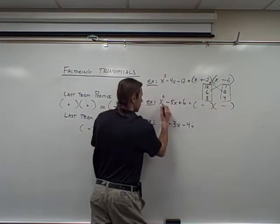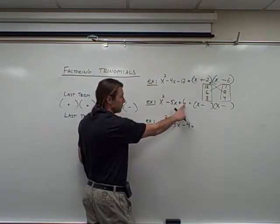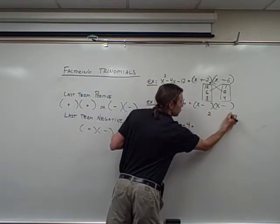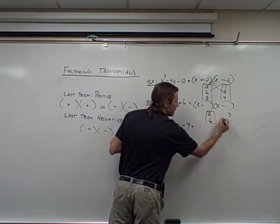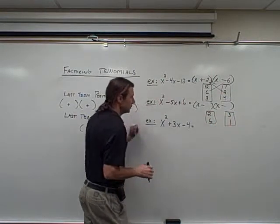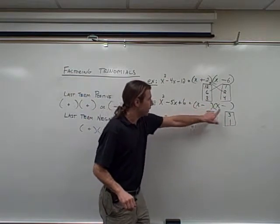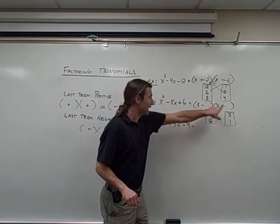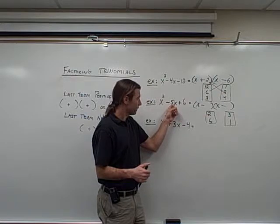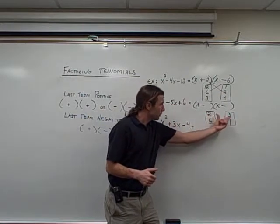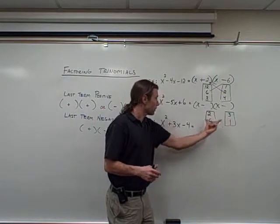So I set up minus, minus, with x and x. Now I'll list factors of 6: 2 and 3, or 6 and 1. Since the signs are the same, I'm going to be adding a negative to a negative — when I add negatives, they make more negatives. So I'm looking for factors that have a sum of 5. The sum of 2 and 3 is 5, so that's going to be the factor pair I choose.